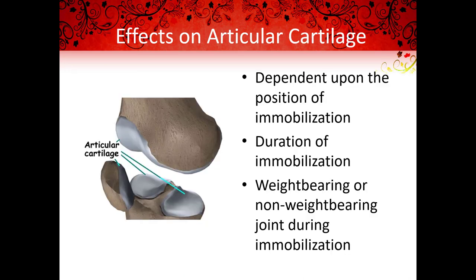Articular cartilage is affected by immobilization based upon the position of the immobilization, the duration of immobilization, and whether or not the joint bears weight during repair. During immobilization, the cartilage becomes thinner. Necrosis or death of the articular cartilage can occur between the joint surfaces if they are immobilized with consistent pressure. The joint may become contracted due to dense fibrous tissues that form around the joint surface, and the normal joint may be replaced with fibro-fatty tissue. We do not know how much time it takes in humans for these changes to occur; however, it occurs after 60 days in rats.